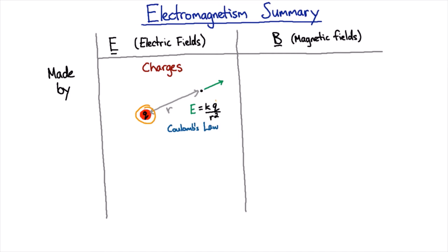And for a negative charge where the sign of that Q is opposite, you just get the opposite vector, same size but pointing the opposite direction. So that's what electric fields are made by.